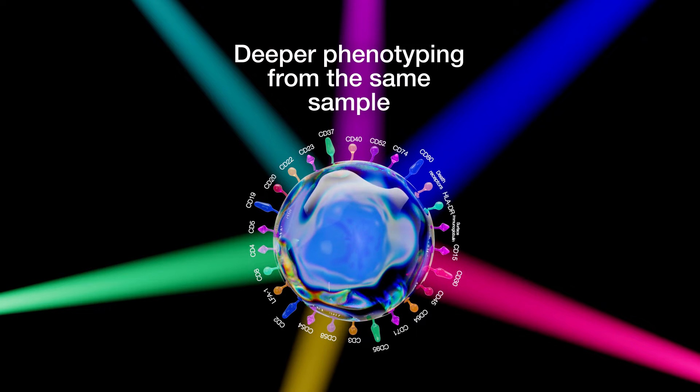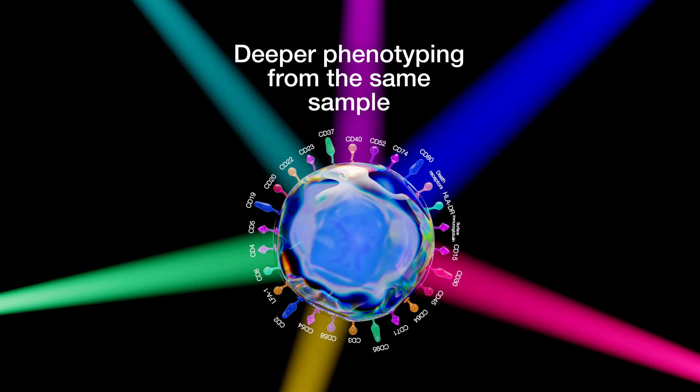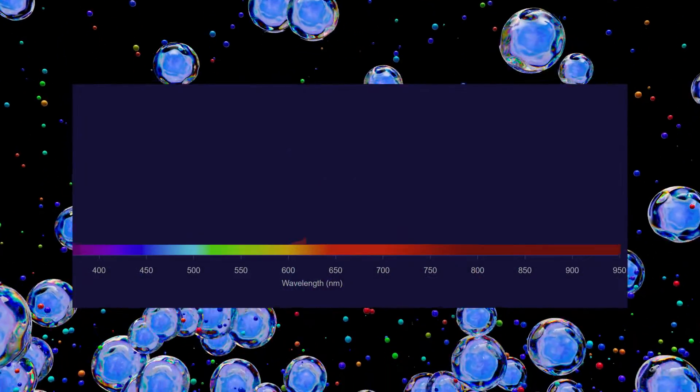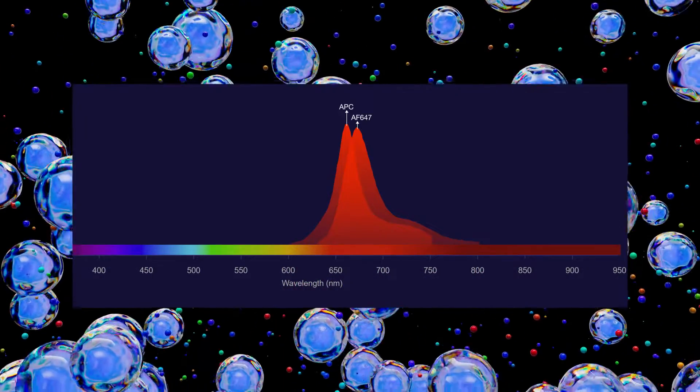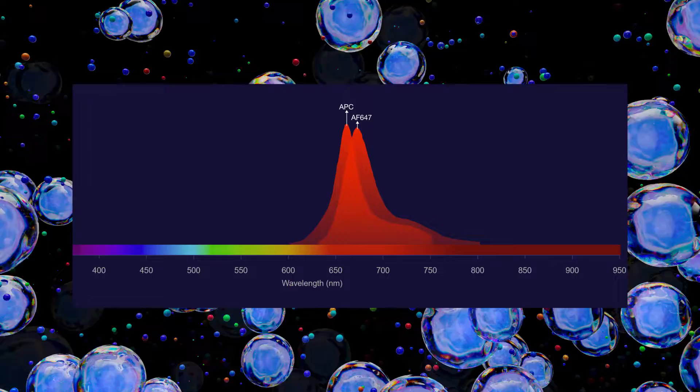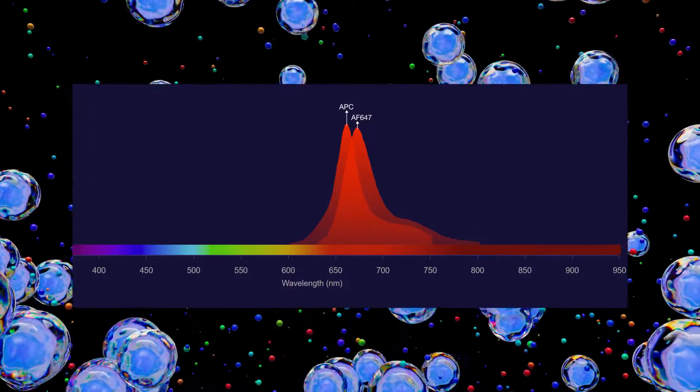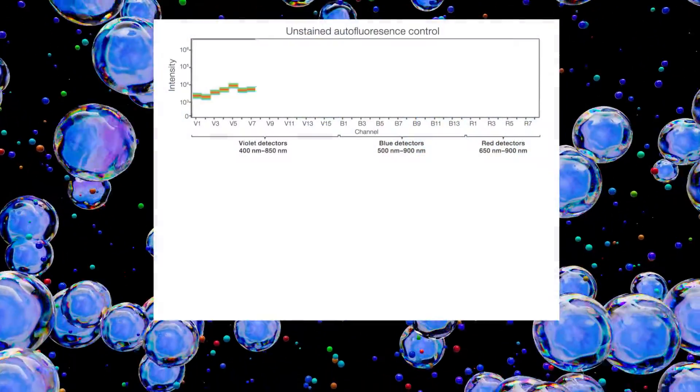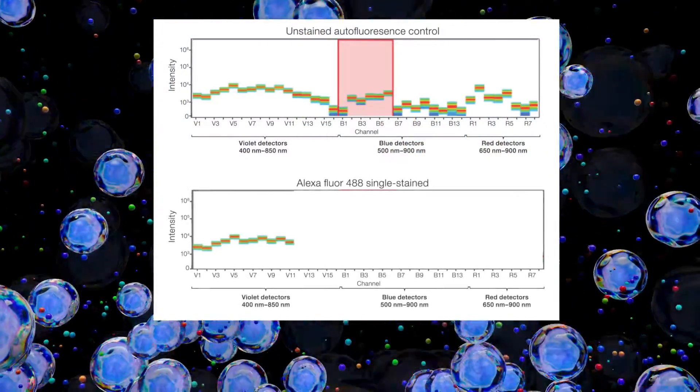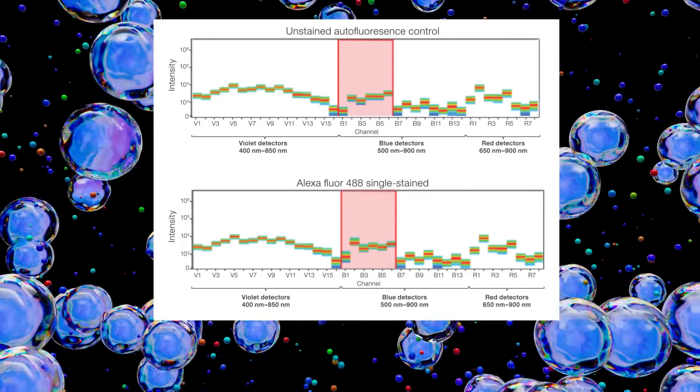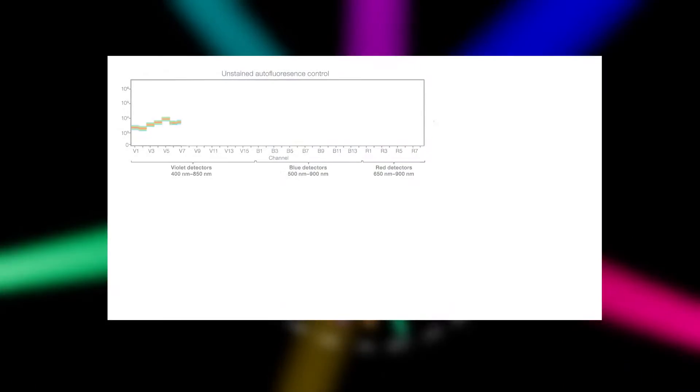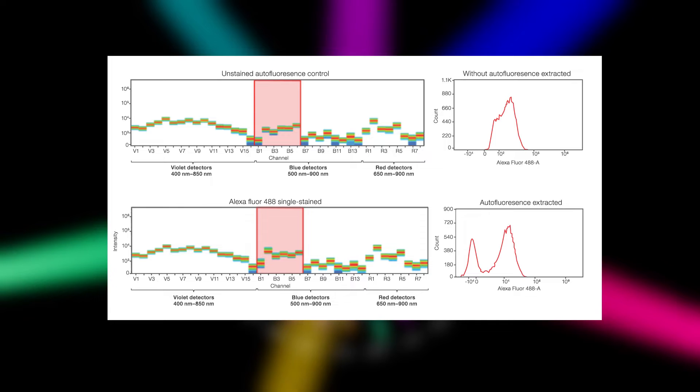Using unmixing algorithms, a spectral flow cytometer can tease apart signals from APC conjugates and the Invitrogen Alexa Flora 647 dye that would otherwise overlap on a conventional flow cytometer. Spectral flow cytometers are also great at removing autofluorescence to increase the sensitivity of your assay.